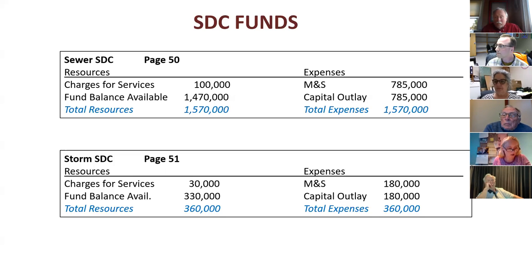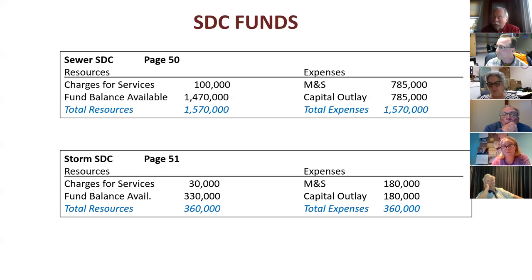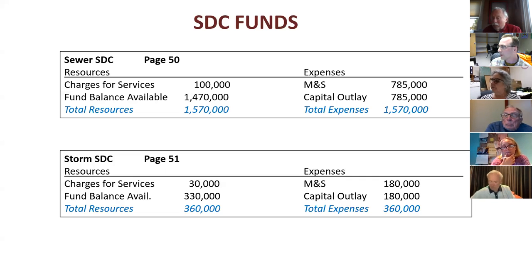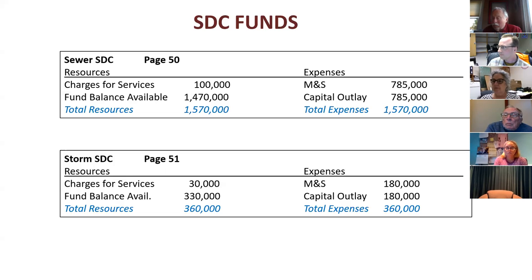A question about all the SDC funds in general: the resources come from when people build and pay fees, so we're making a guess about what's going to happen in the next year. The estimate shows growth happening more than last year. Will that be accurate considering we're missing a few months? In short, yes — we're seeing a lot more development than in the previous year. Sue mentions a couple of subdivisions that have recently finished and aren't fully billed out yet, and they're still seeing building permits coming through.